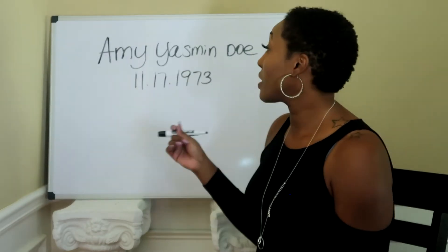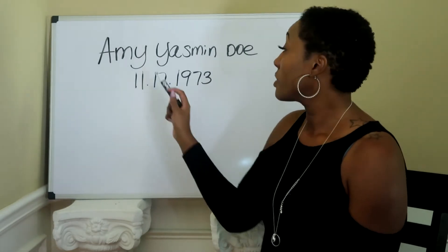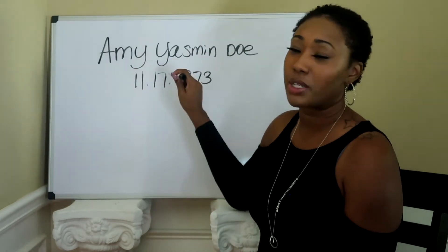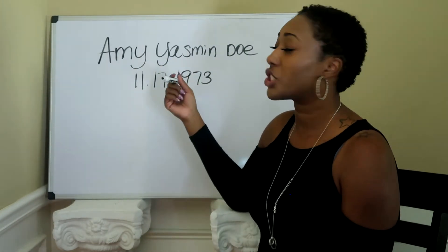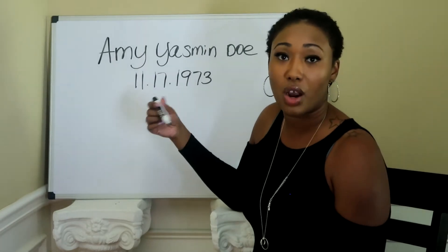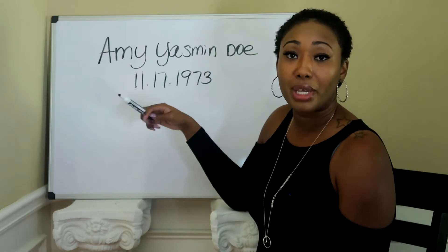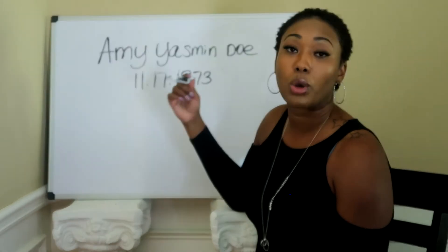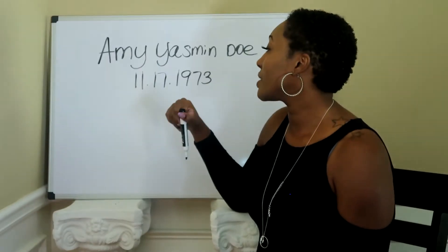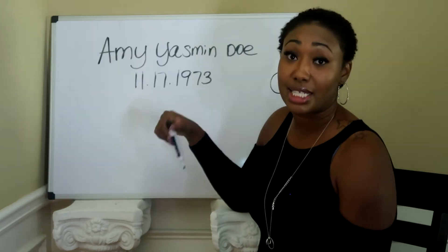First, we're going to look at our example here. We have Amy Yasmin Doe. I named her this because I wanted to show you guys, once we get to the personality number or the heart desire number, where a Y would be a vowel and where Y would be a consonant. And we have her date of birth being 11/17/1973.